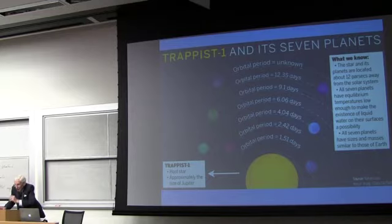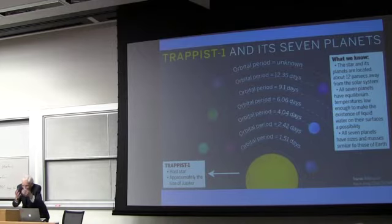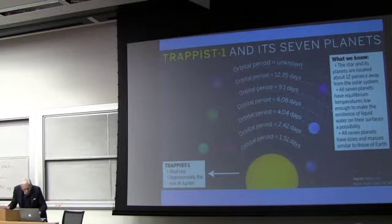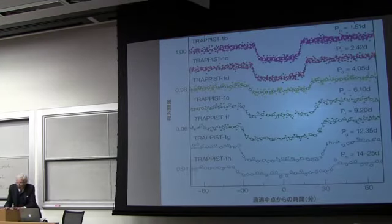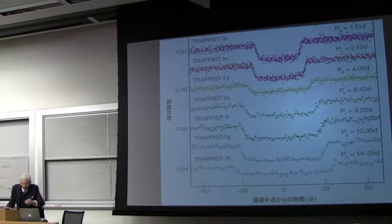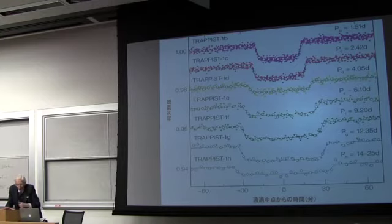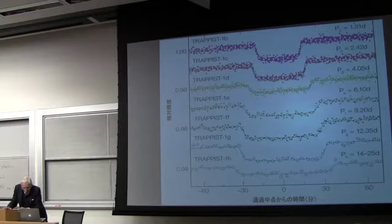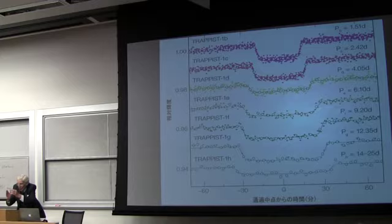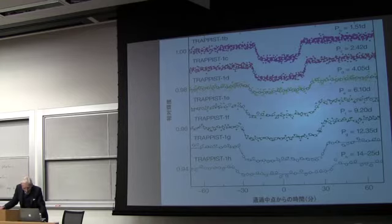Some may be tidally locked, presenting the same face to the star all the time. So there would be a kind of apartheid. Everyone would live on the sunny side, except the astronomers on the other side. Well, to show the evidence for this, this is the data from the Spitzer telescope on all the transits. So you can see that they've observed many, many transits. There's no doubt about them. And you can infer from the transits, you can infer the size of the planet from the fraction of the light it blocks out. And you could, of course, infer the length of its year from the periodicity of these.